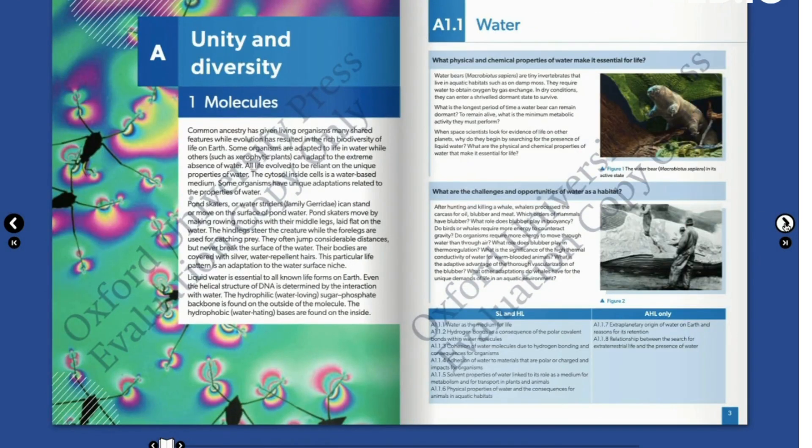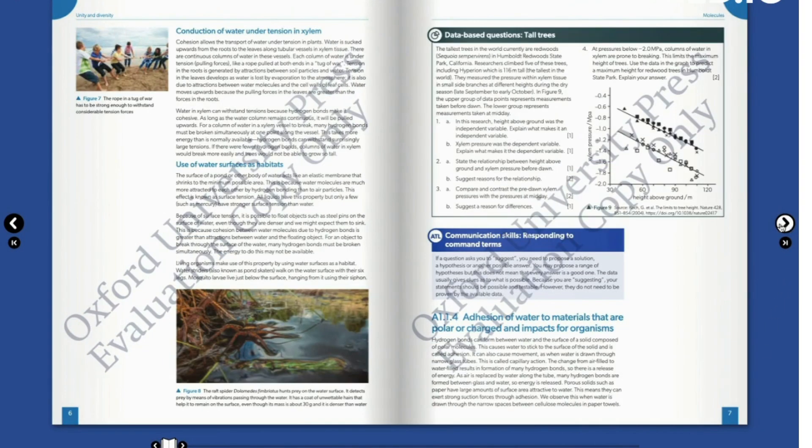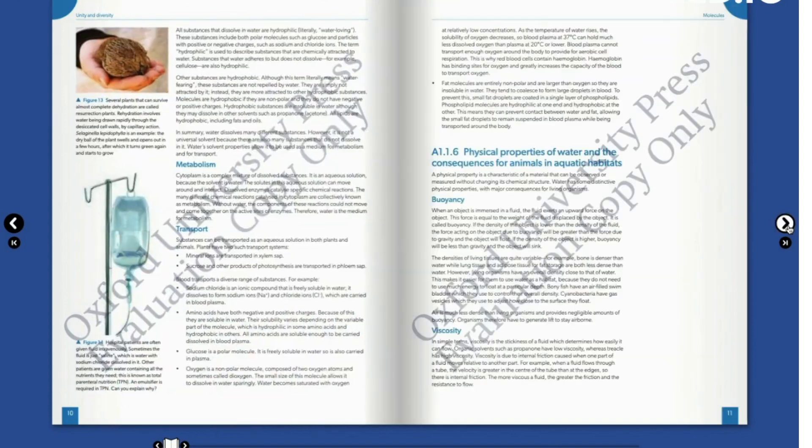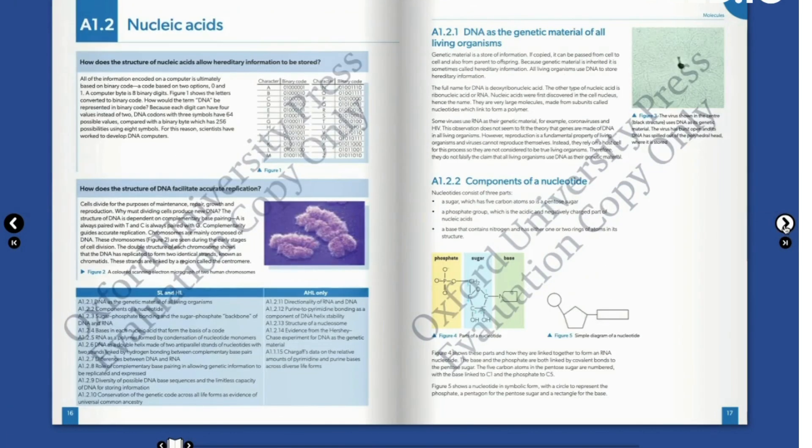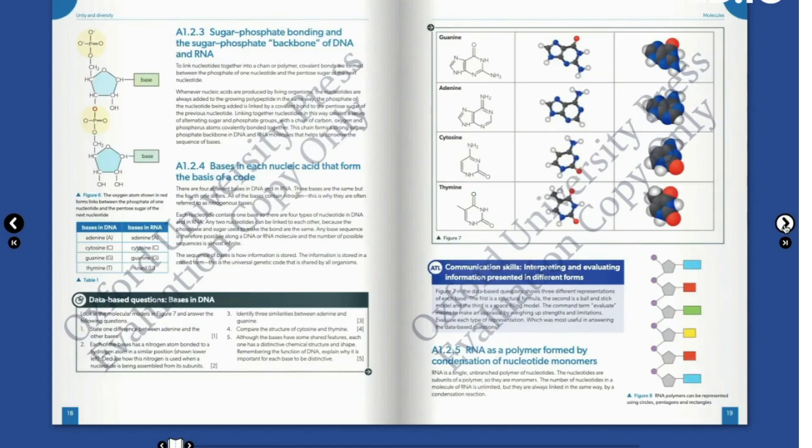Let's see how the chapters actually look like. The chapter looks like this. Here we have the standard level and higher level syllabus outline. Here we have the ATL communication skills, database questions, and at the end of the chapter you see the linking questions again. In general, the Oxford biology course book is very simple, very precise, and based on the new curriculum.